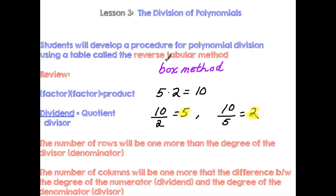So how do we find the boxes? We're going to use this idea: the number of rows is always one more than the degree of the divisor. And the number of columns is you're going to take the power of the dividend, subtract the power of the divisor, and then add one. So let's look at a couple of examples.